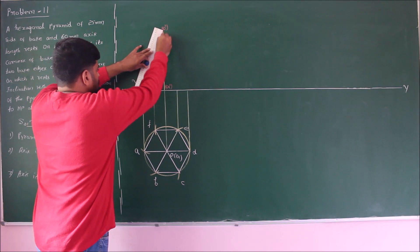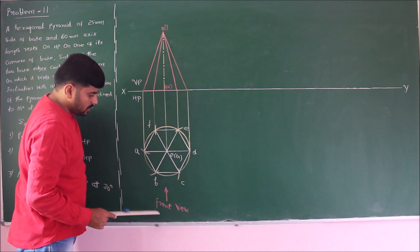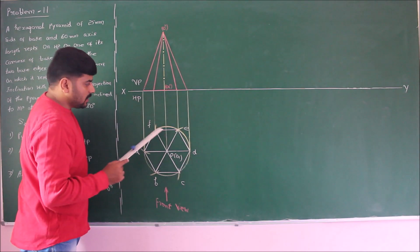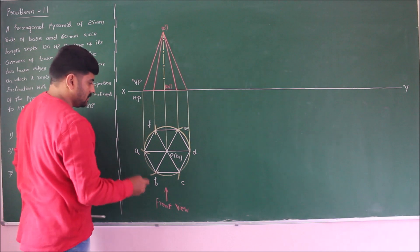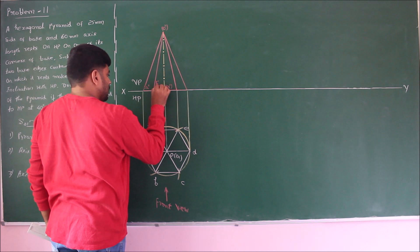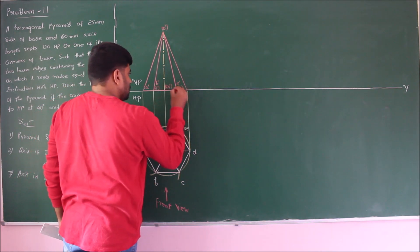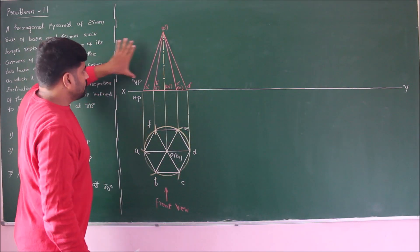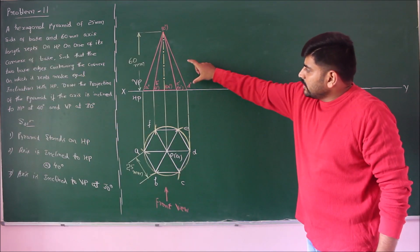The axis is always invisible in the front view — o1 prime and o prime. Connect from the apex to all the base corners. The front view observer is positioned such that corners a, b, c, and d are visible, whereas f and e are invisible. So a prime and b prime are visible, f prime is invisible, c prime is visible, e prime is invisible, and finally d prime.